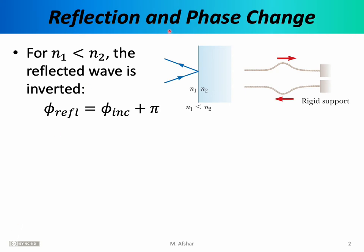Before talking about thin films, we need to talk about the reflection of light and how its phase changes upon reflection. Consider a beam of light reflecting from the boundary between two media — medium one with index n1 and a second medium with index n2. We'll assume that the index of medium one is less than the index of medium two. For example, air and glass: the index of refraction of air is approximately 1, and for a typical piece of glass, the index is 1.5. So we have a situation where the first medium has a lower index than the second medium.